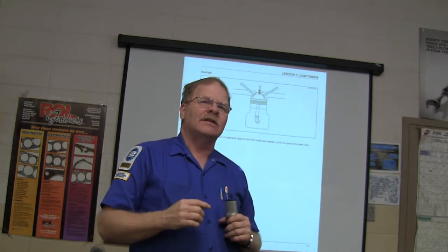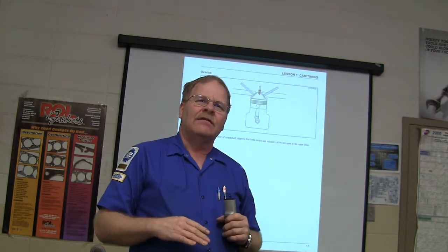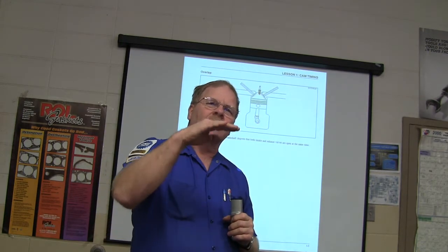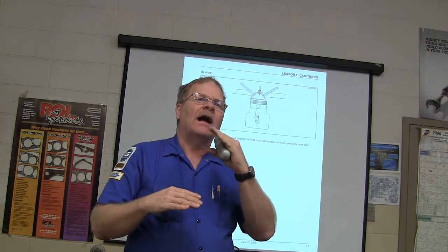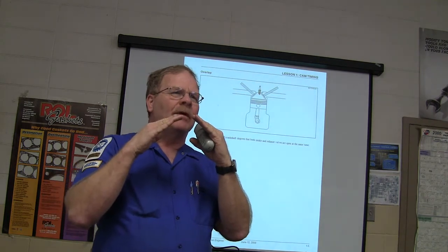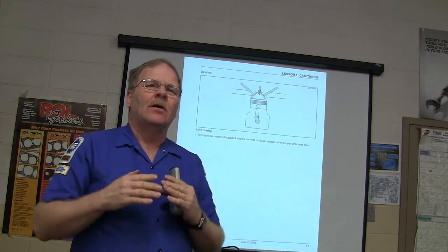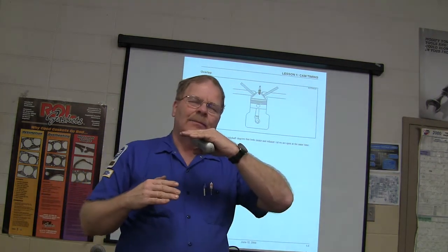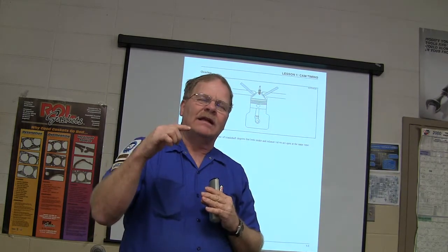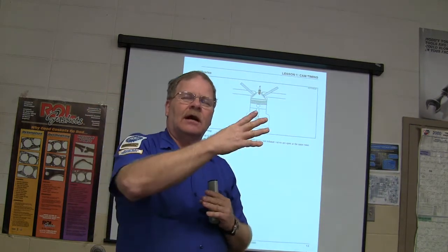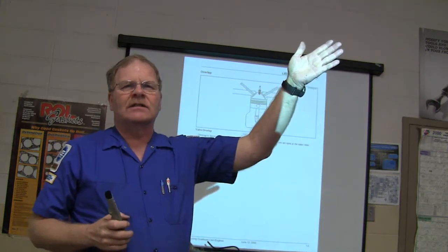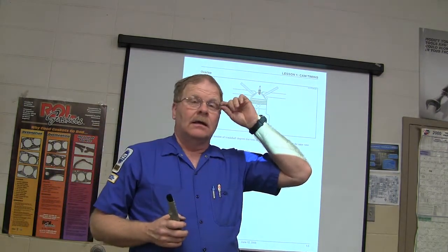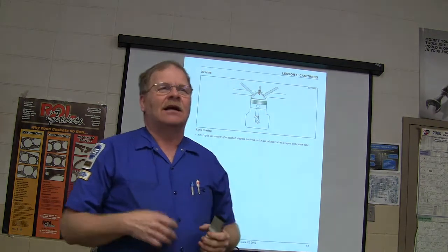But there comes a time at the end of the exhaust stroke where the exhaust valve is almost completely closed, but it hasn't quite closed yet, and the intake valve begins to open. That's overlap. Why is that there? Your piston's right up at the top. You're going to open that intake valve so that some air will come rushing in there that's nice and clean, and it pushes the rest of that old exhaust out of there. That way you've got a nice clean mix in there.